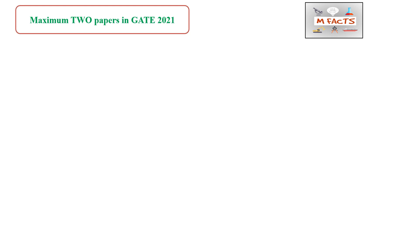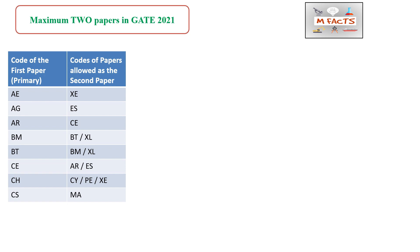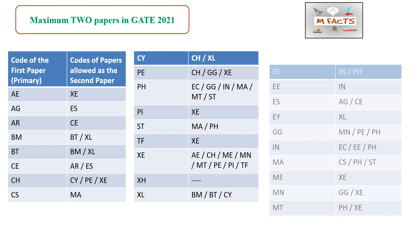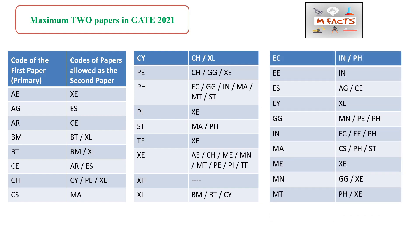This year, a student can write two exams in GATE 2021, but there are specific allowed combinations. I have made a table of those combinations from the GATE information brochure. For example, if you are writing Aerospace Engineering (AE) as your primary paper, you can only write XC (General Science) as the second paper. For AG, the allowed second paper is ES (Environmental Science and Engineering).